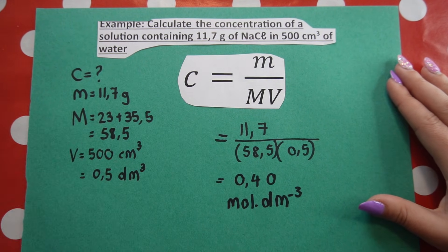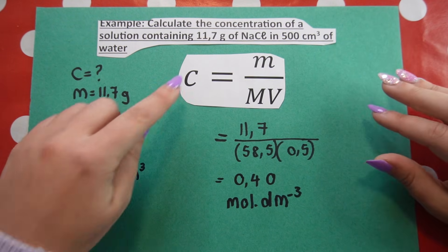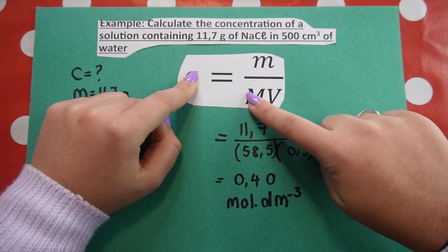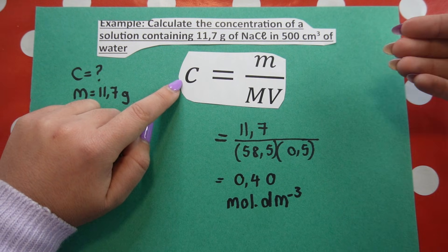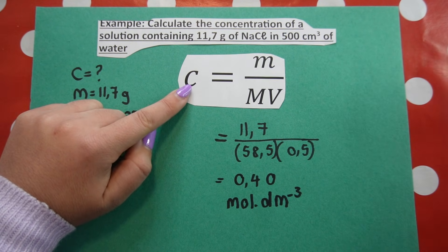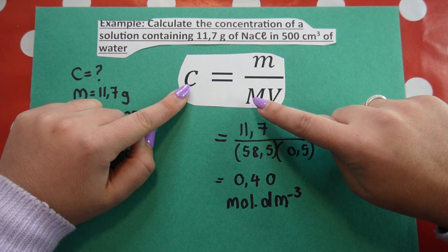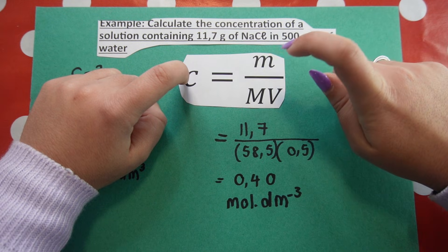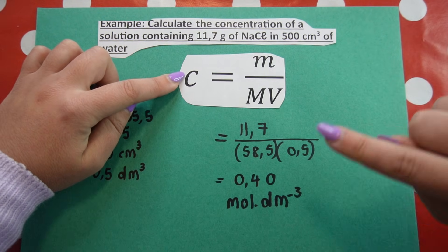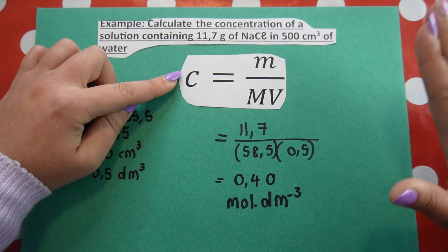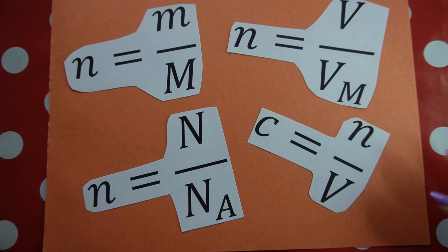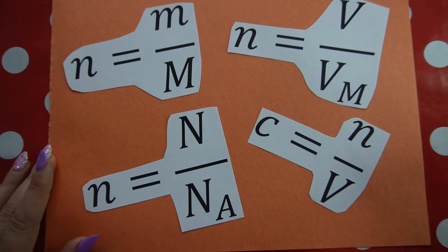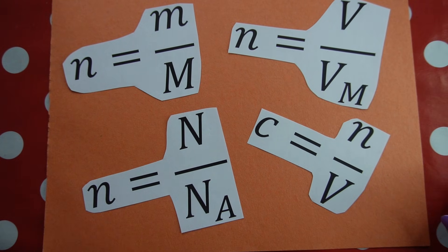We can also use this formula to work backwards to calculate mass — substituting in concentration, molar mass, and volume, then using inverse operations to solve for mass. In the same way, we can calculate the volume of a solution, or even identify the compound by calculating the molar mass if given concentration, volume, and mass. Always start with your blank formula first, substitute your variables in the correct places, and if you do your mathematical operations in the correct order you should get the correct answer, provided you give the correct units. Check out the links in my description below for more stoichiometry, chemistry, and physics videos.